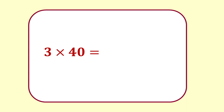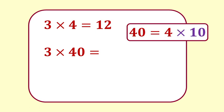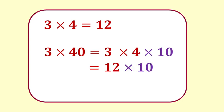What is 3 times 40 equal to? 3 times 4 equals 12. This is a basic multiplication fact. From this we can calculate 3 times 40. 40 is 4 times 10. So 3 times 40 is 3 times 4 times 10, which equals 12 times 10 which equals 120.